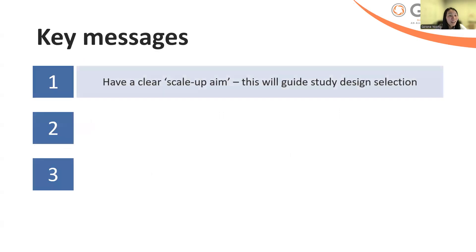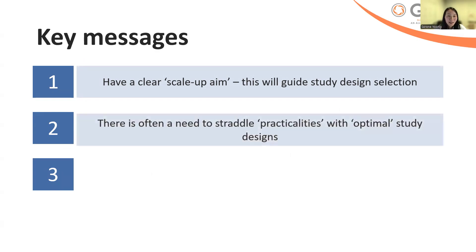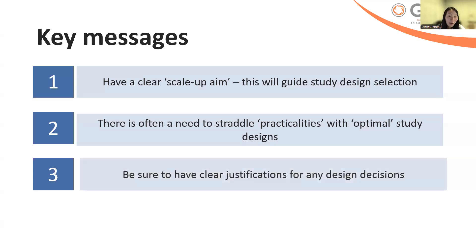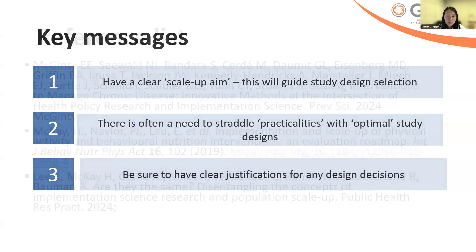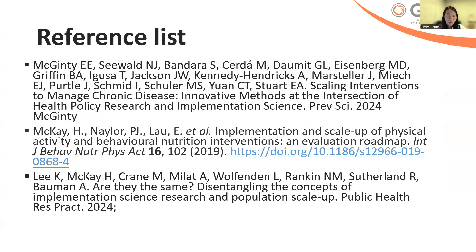To summarize: have a clear scale-up aim, as this will really inform study design selection. If you have a descriptive scale-up study, you do not need to run a randomized control trial. There's often a need to straddle practicalities and opportunistic scale-up with optimal study designs. Be sure to keep a close record of any justifications and design decisions you make when studying scale-up. This is some of the references I drew on — in particular, the McGinty study is really worth having a read of. Thank you very much.